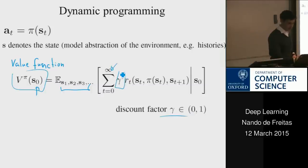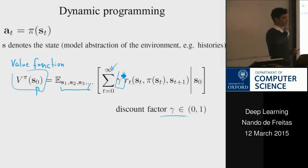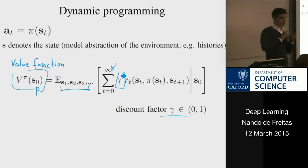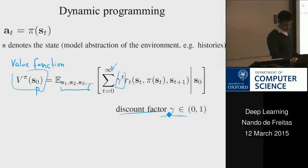The discount factor gamma is raised to the power t so that future rewards matter less than immediate rewards. Depending on your choice of gamma, you pay attention to different horizons. Another way to think of this probabilistically: we're placing a geometric distribution on when we believe we're going to get reward — (1 - gamma) * gamma^t indicating reward at time step t. The most intuitive way is just discounting of future rewards.